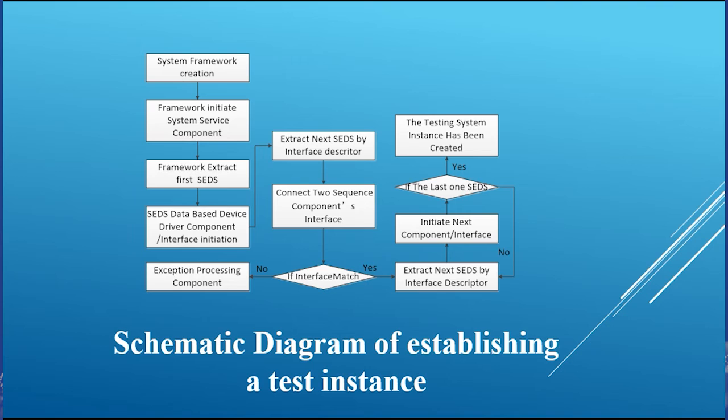Similarly, the process continues until all the spacecraft electronic datasheets have been loaded sequentially. By then, the system framework instances the next component whose input interface perfectly matches the previous component's output interface, and all components will be instantiated correspondingly. Finally, according to each component's interface descriptor, the framework connects all the components together.